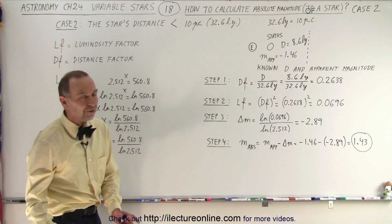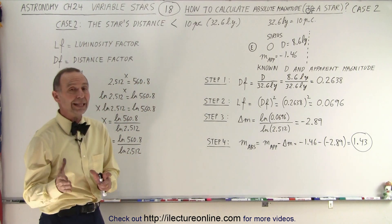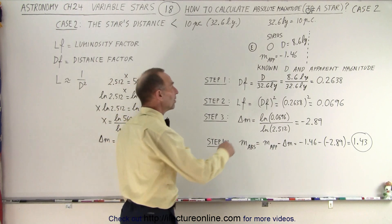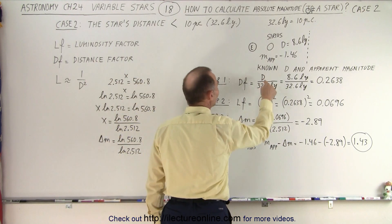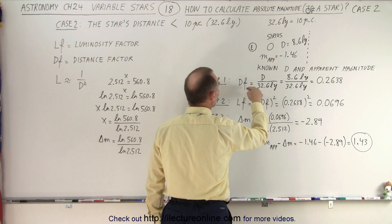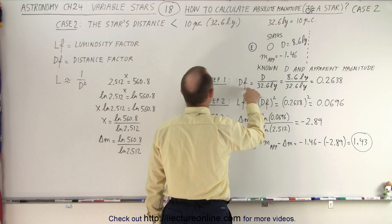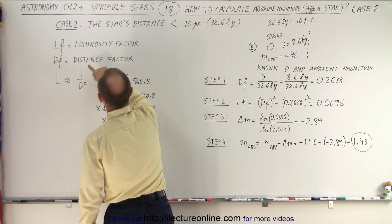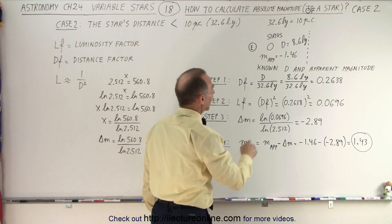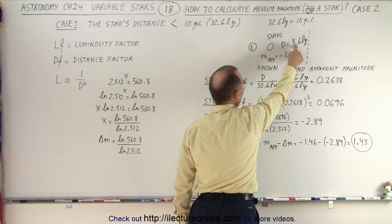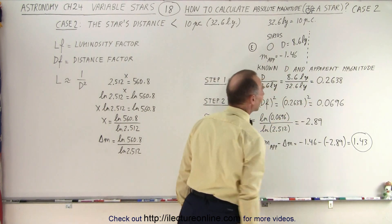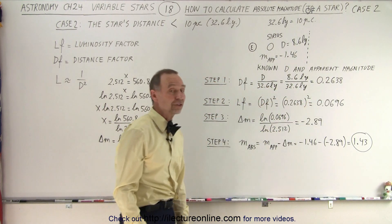We're going to follow the exact same steps as we did in the previous video. First, we're going to take the distance and divide it by the standard distance of 32.6 light years to get the distance factor. So we get 8.6 light years divided by 32.6 to get that distance factor.